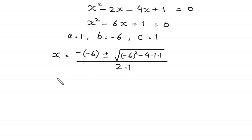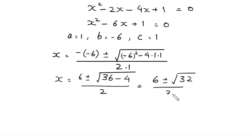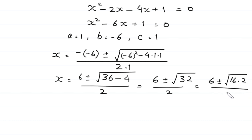So x equals 6 plus or minus square root of (negative 6)² minus 4 times 1 times 1, divided by 2 times 1. This gives x equals 6 plus or minus square root of 36 minus 4, divided by 2, which is 6 plus or minus square root of 32, divided by 2.